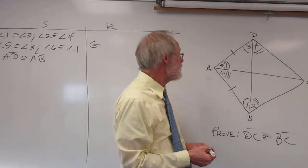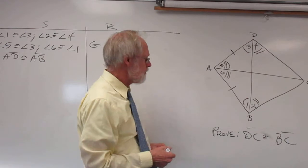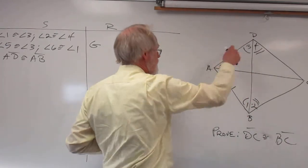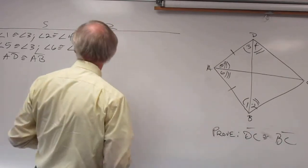You have a lot of given information as you can see. One is congruent to three, two is congruent to four, five is congruent to six, and AD is congruent to AB. So let's work from there.